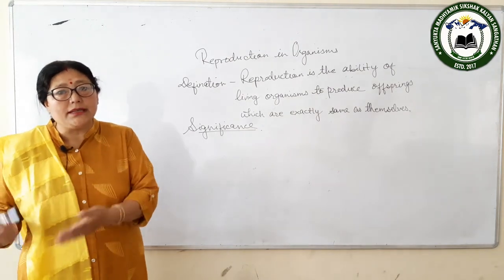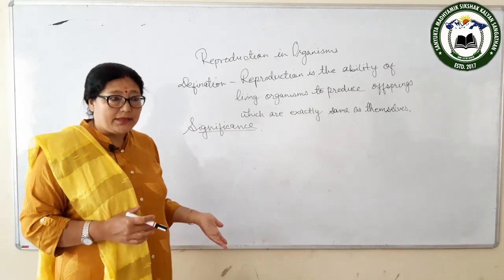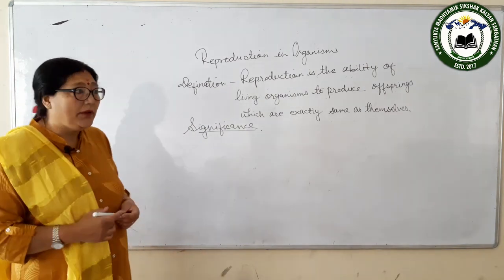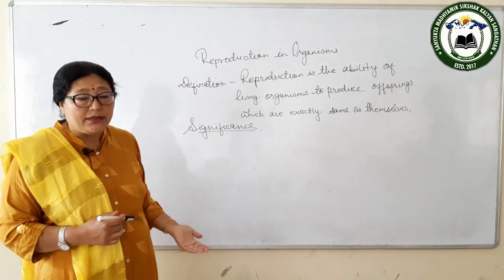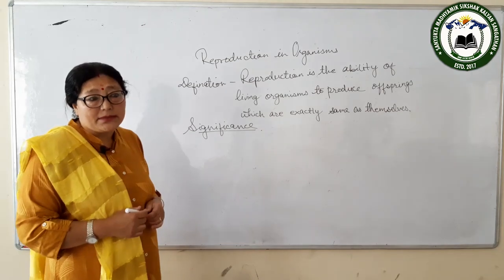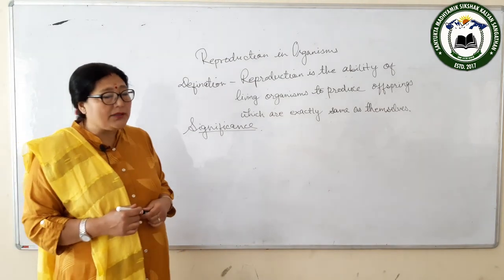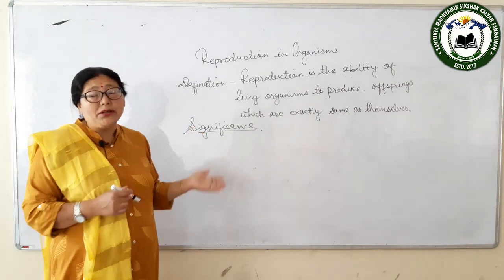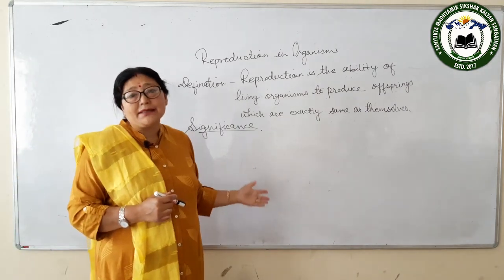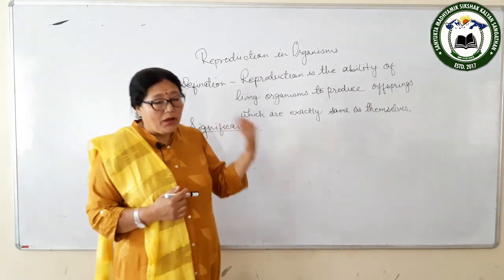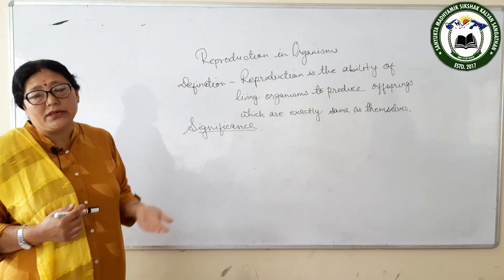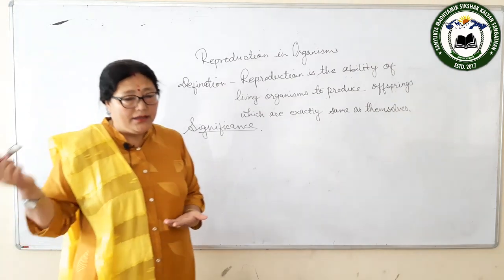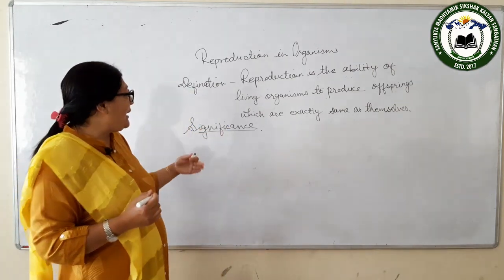By reproduction, the number of individuals is maintained and their race is maintained. This process ensures the continuity of living organisms or continuity of generation. Through sexual reproduction — where there is fusion of male and female gametes — new characters are produced in the offspring, which ultimately helps in variation and evolution.